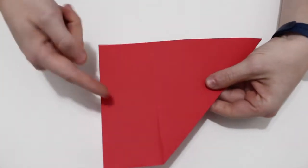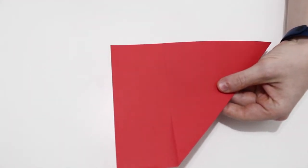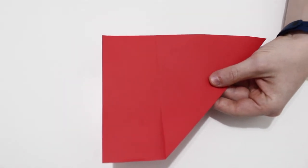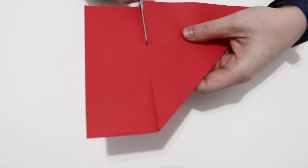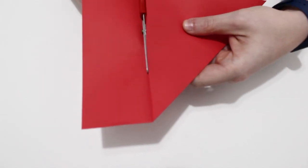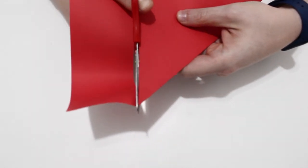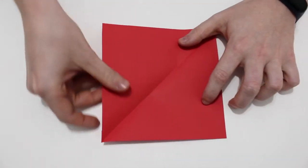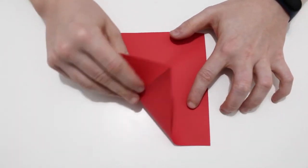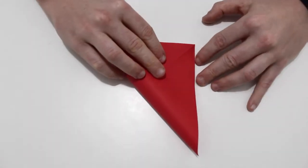Ahora con las tijeras vamos a recortar el rectángulo que sobra. La abrimos y volvemos a llevar la esquina superior derecha hacia la esquina contraria.